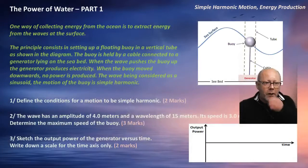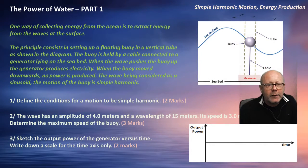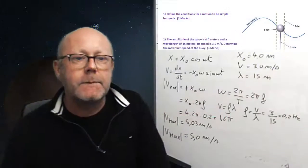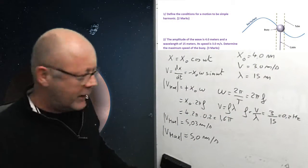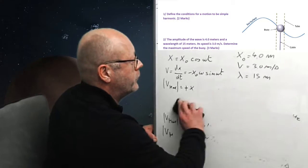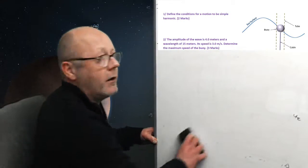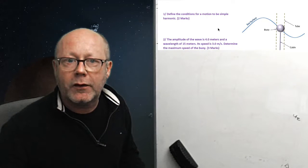But, third question. Sketch the output power of the generator versus time. Write down the scale for the time axis only. 2 marks. Okay. So, let's erase the board. And I will also put the question up here.